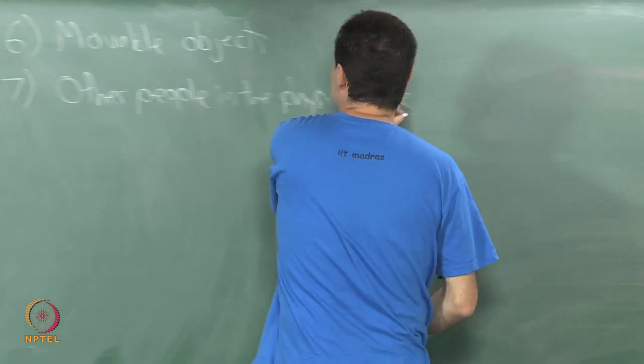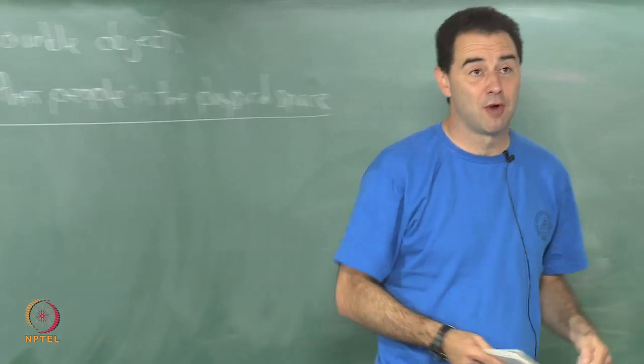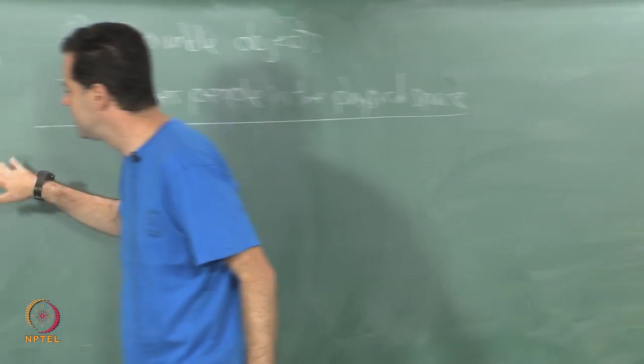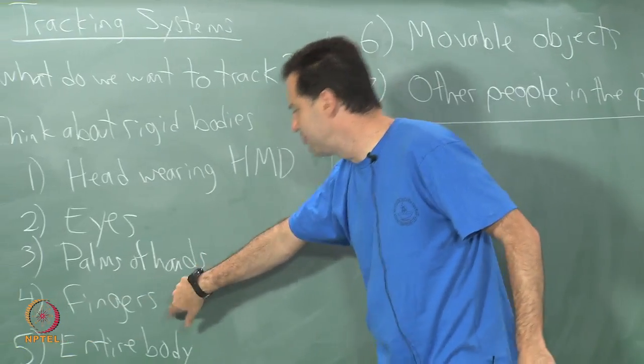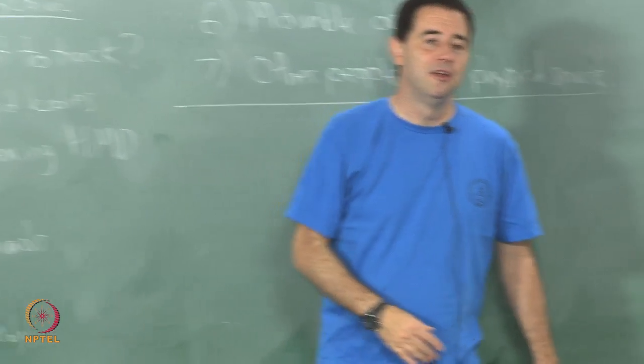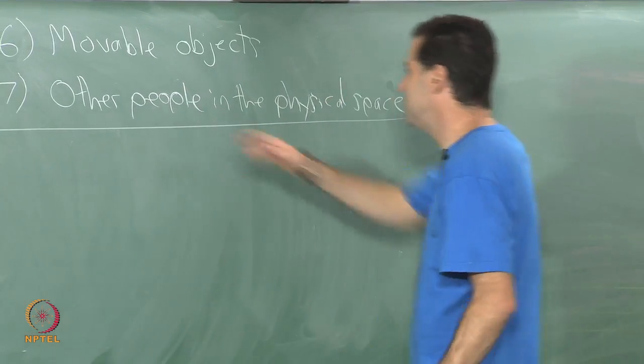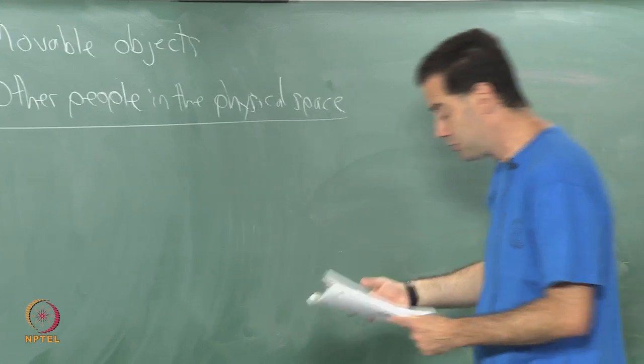That gives you a bunch of different possible bodies to track and sometimes these bodies are all attached together like the head and the eyes and palms your hands and your fingers. There are kinematic models you could make and utilize to improve tracking methods. It is not necessarily just a bunch of detached rigid bodies.